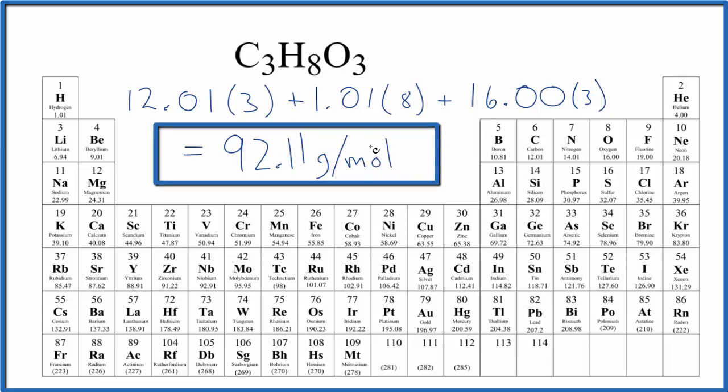Again, my periodic table rounds to two decimal places. If yours is different, you might've got a slightly different answer here. That means if we had one mole of glycerin, C3H8O3, we would have 92.11 grams.